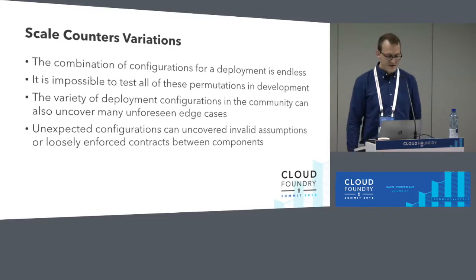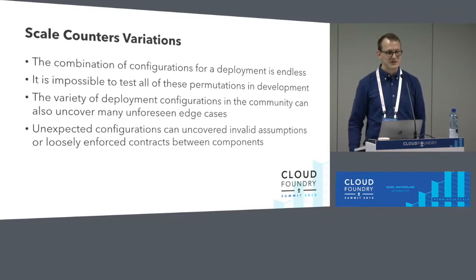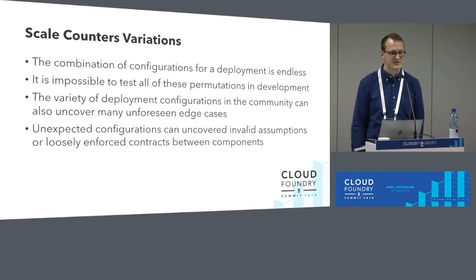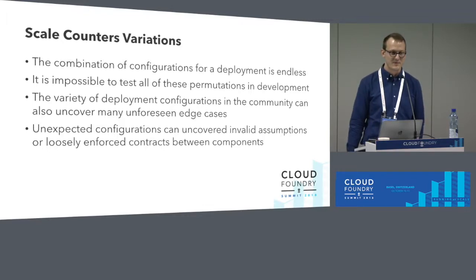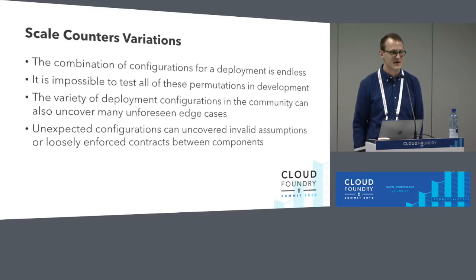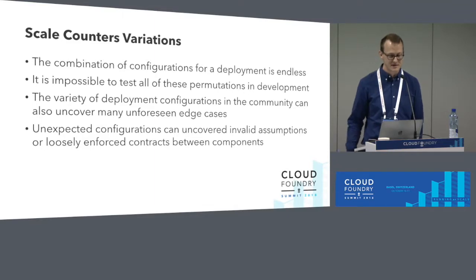Another area is around integration and variations. If you deploy Cloud Foundry, you might see that in CF deployment there are 2,500 lines of configuration. With each of those different settings, there's a possibility for different things to go wrong. We do a really good job in CF deployment of shipping a great product, but the release team can only test a certain number of configurations — it's not going to be the full breadth of all the configurations out there in the community.